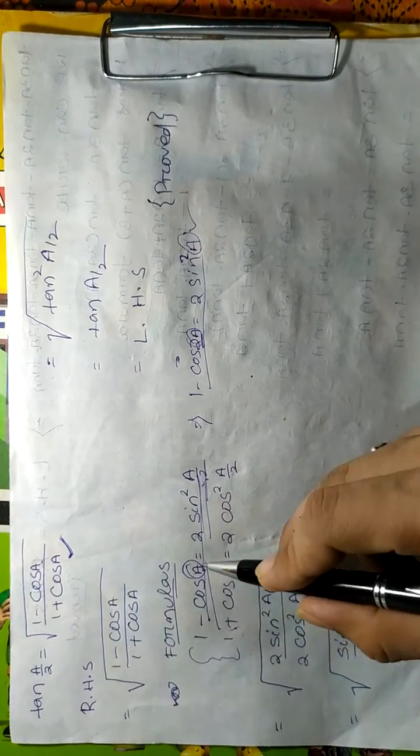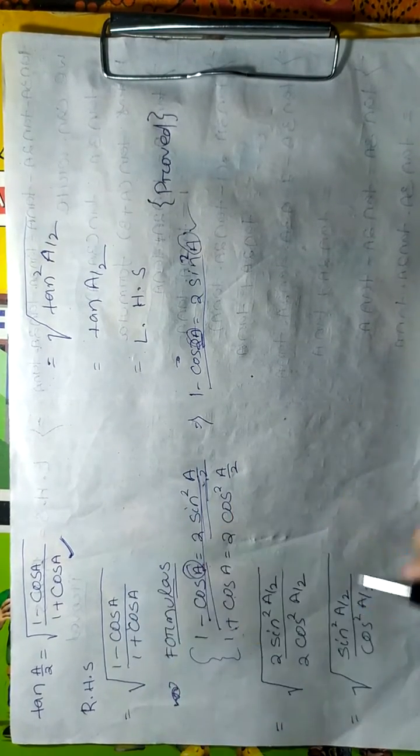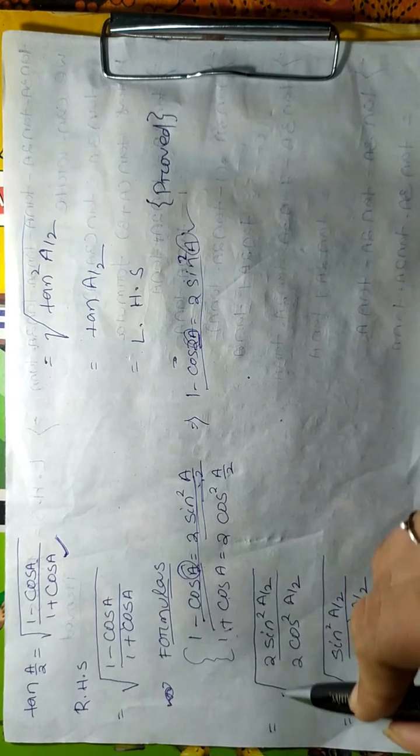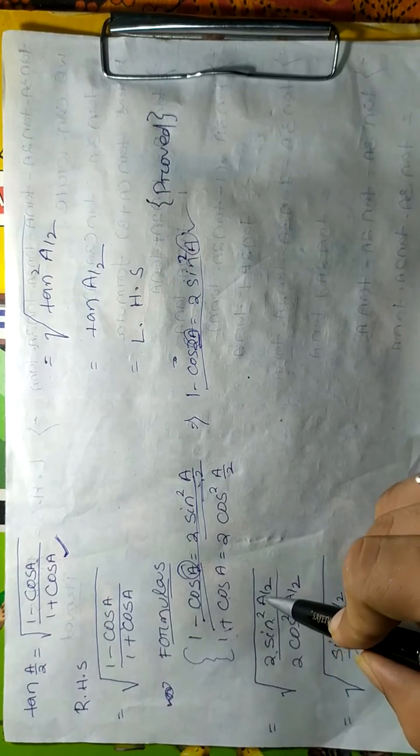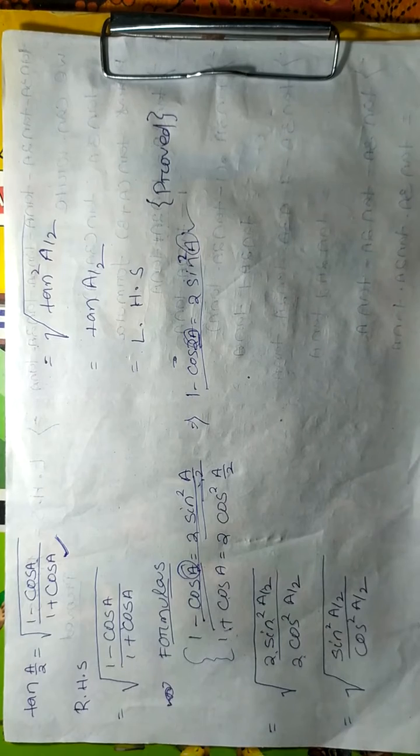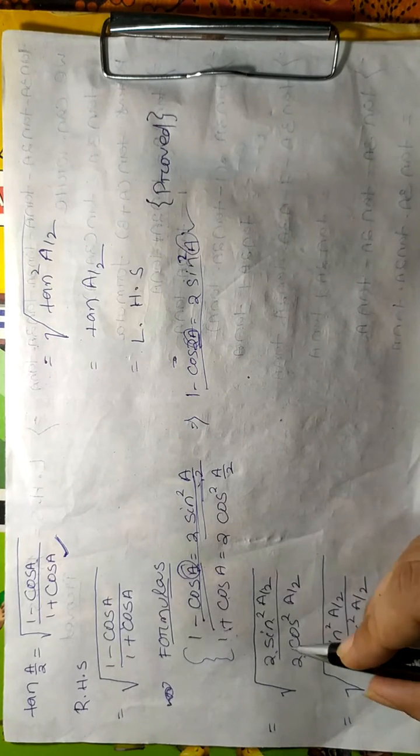We have 1 - cos a and 1 + cos a in the above solution. We get, due to power of 2: sine square a by 2 over 2 cos square a by 2. After the two and two cancel out...